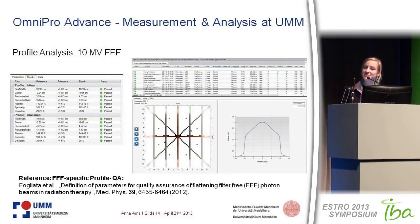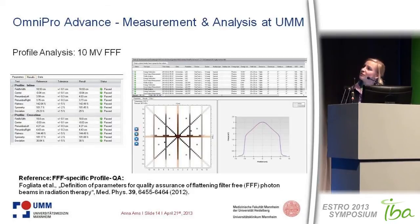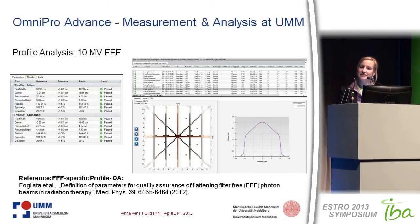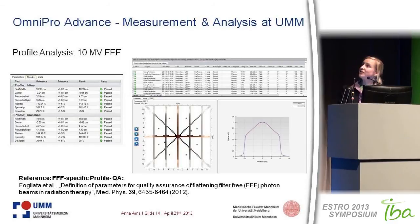This might be interesting for most of you — the new flattening filter free technique. This is how the FFF profile looks; we generated this data directly after our acceptance testing. We have to set the tolerance for flatness quite high because flatness is simply not given anymore. If you compare to your reference data and everything is fine, everything is green. We are currently developing a QA procedure for flattening filter free, referencing the paper by Fogliata et al., which analyzes the slope of the profile.